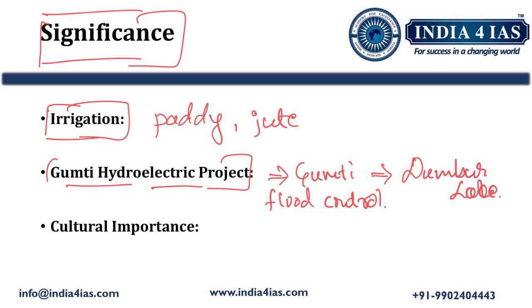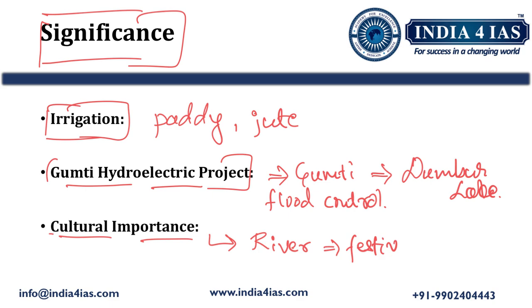The third significance is cultural importance. The Gumti River is associated with various local festivals in Tripura.